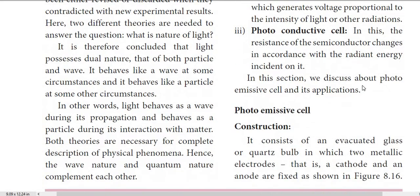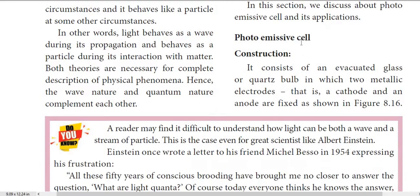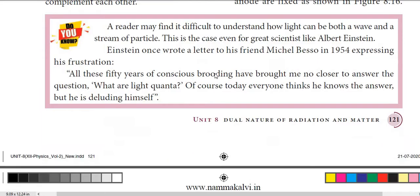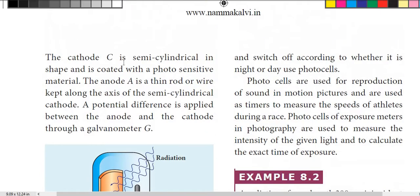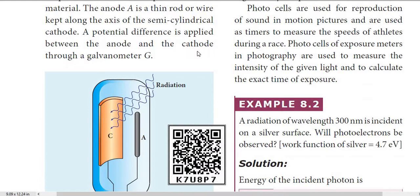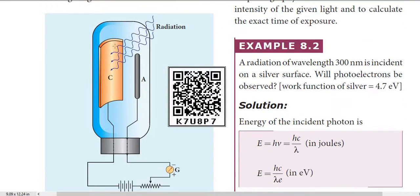Now we will discuss the photoemissive cell and its applications in detail. In this cell, an evacuated glass bulb is used in which metallic electrodes — cathode and anode — are fixed. The cathode C is semi-cylindrical in shape and is coated with a photosensitive material. The anode A is a thin rod kept along the axis of the semi-cylindrical cathode. A potential difference is applied between anode and cathode through a galvanometer.